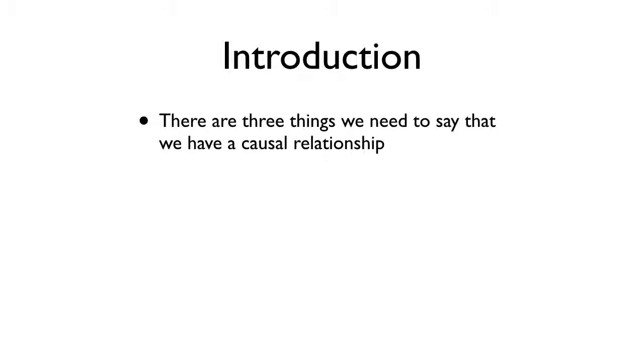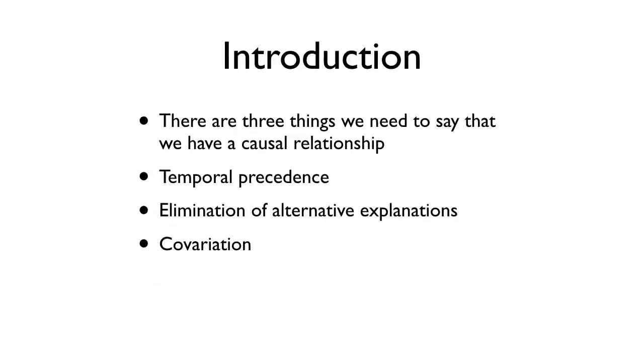So there's three things we need to say we have a causal relationship. And if you've taken 2127 or any other typical research methods course, you know this. There are three important things, and I'll bring them all up at once here. We need temporal precedence. Causes come before effects. That's how our universe works.